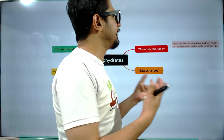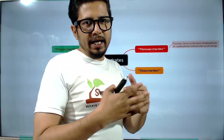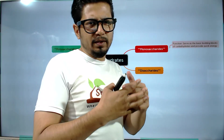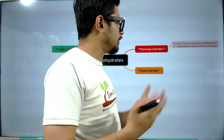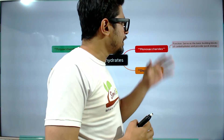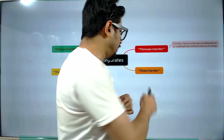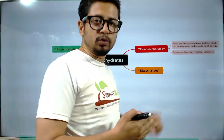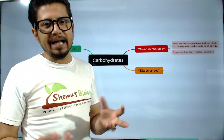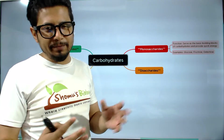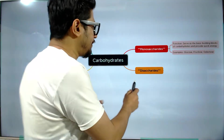Monosaccharides serve as the basic building blocks of carbohydrates, which are present very abundantly throughout the cell and provide quick energy to our body. For example, glucose, fructose, and galactose are readily available and our body is always ready to utilize them because they are easily metabolizable.